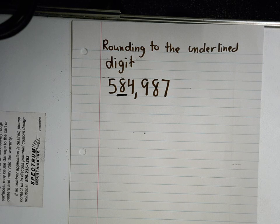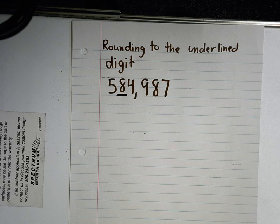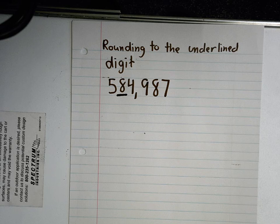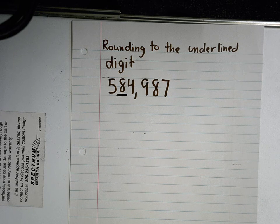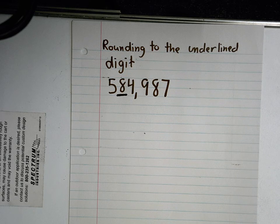The number I have right here is 584,987. What place value is underlined? Ten thousands. The underlined digit is in the ten thousands place.